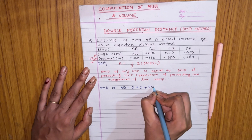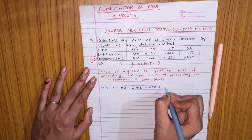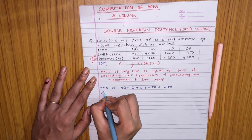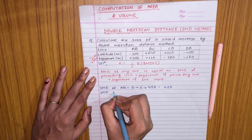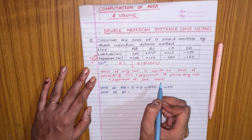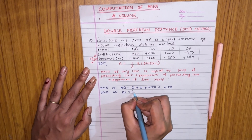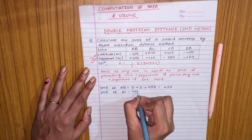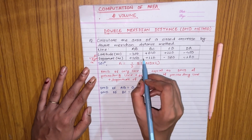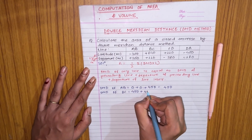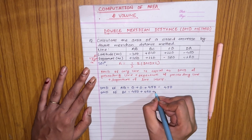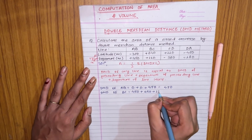The DMD of BC equals the DMD of the preceding line, which is 450, plus the departure of the preceding line, which is also 450, plus the departure of line BC itself, which is 110. So the DMD of BC equals 450 plus 450 plus 110, which is 1010.